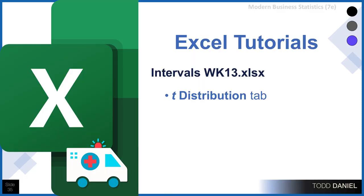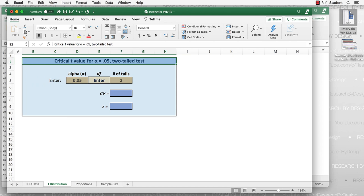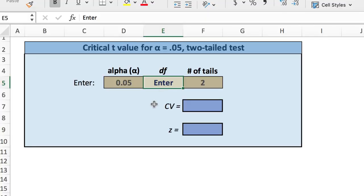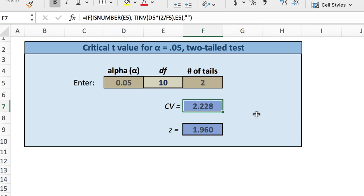Let's prove that using the sampling week 13 Excel spreadsheet, using the t-distribution tab. There's only one thing to enter: the degrees of freedom. We want to know how many degrees of freedom are necessary to reach normality. Starting with 10 degrees of freedom, which we know is very small, we get a critical value of 2.228. Remember that the z-score we're looking for is 1.96, so obviously 10 is too small.